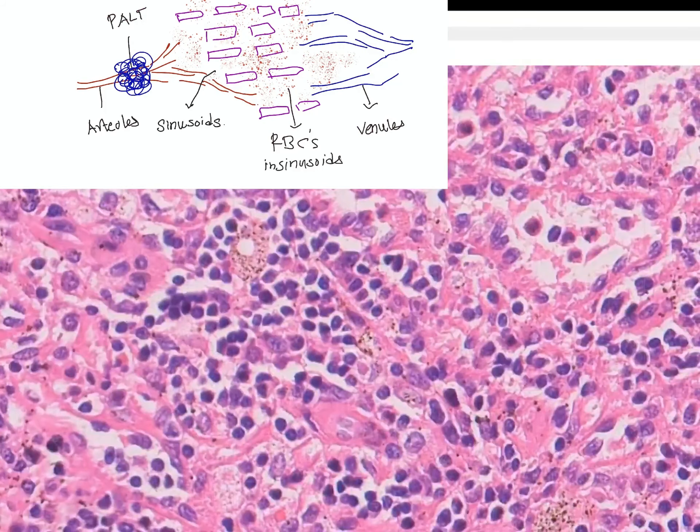These are the sinusoids lined by small endothelial cells. The gaps are wide and there are hemosiderin-laden macrophages along with lymphocytes and plasma cells. This is how the spleen looks, and you can clearly see the red-staining areas.